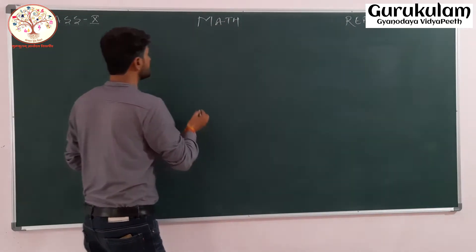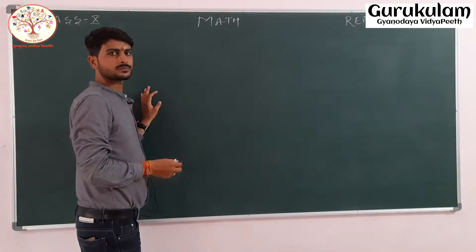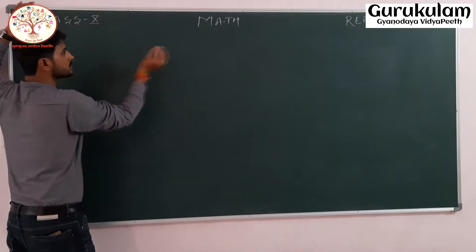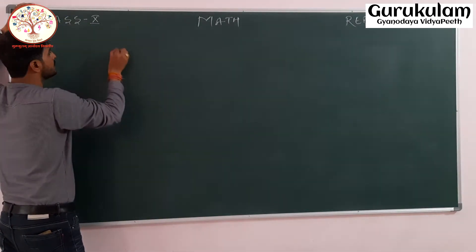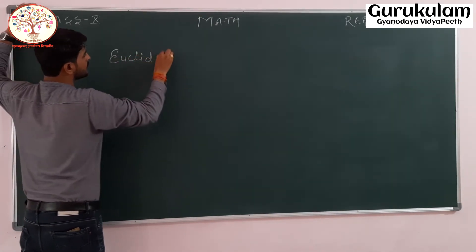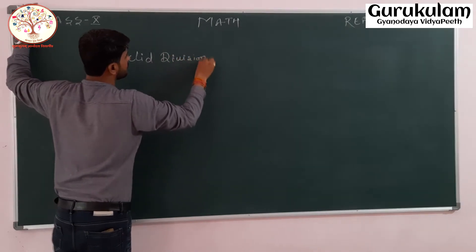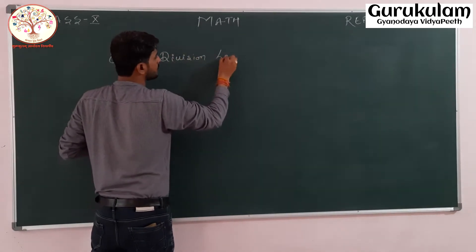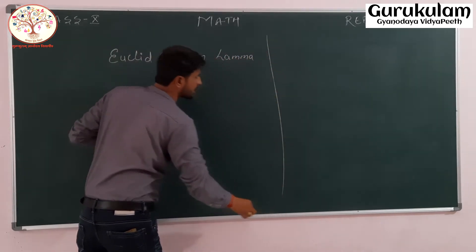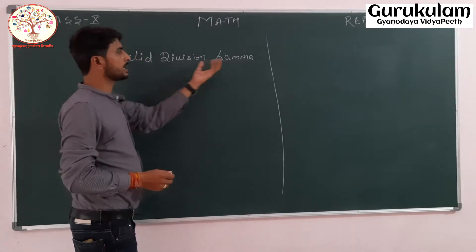Today we are going to start the new topic of our chapter. The very first topic of Chapter 1 — Real Numbers — is Euclid's Division Lemma. This is the first topic of the chapter, Real Numbers.